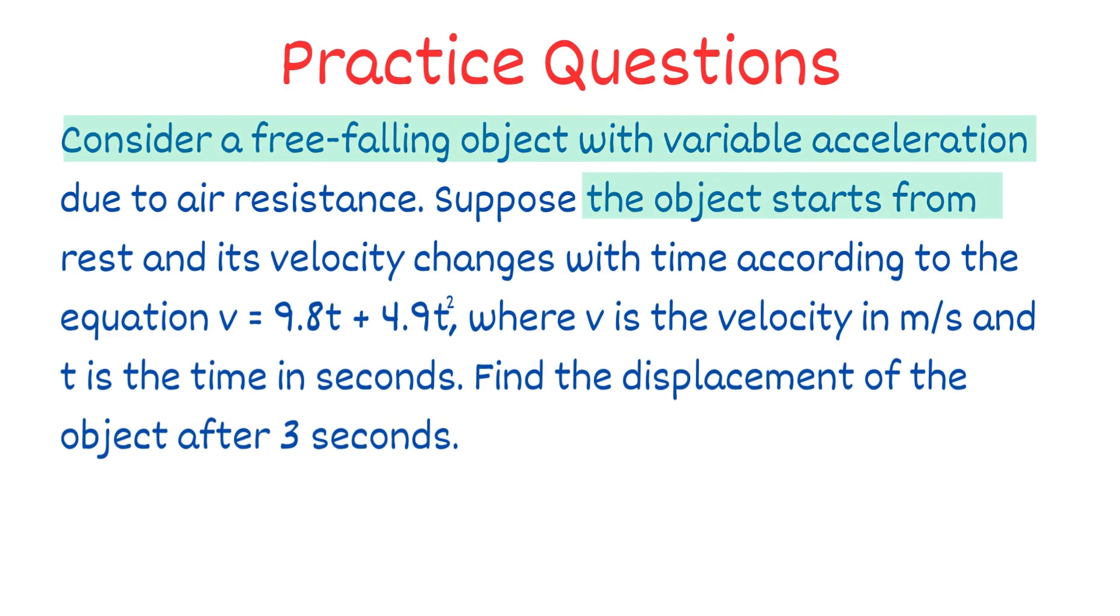The object starts from rest and its velocity changes with time according to the equation v = 9.8t + 4.9t², where v is the velocity in m/s and t is the time in seconds. Find the displacement of the object after 3 seconds.